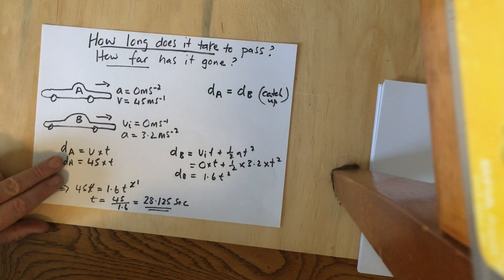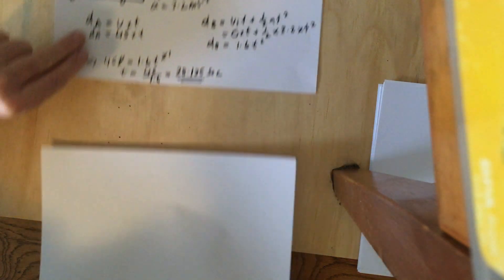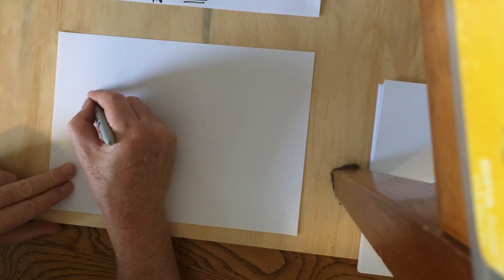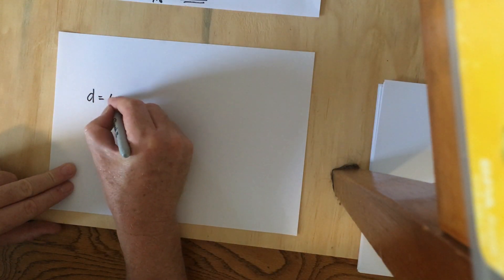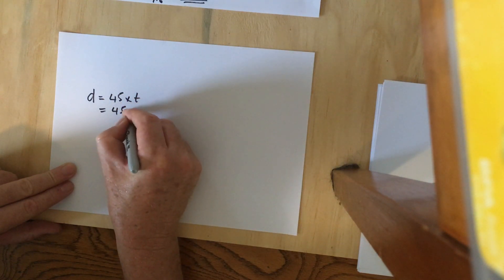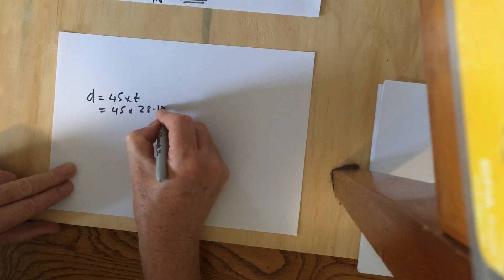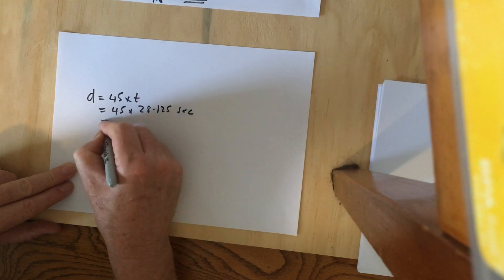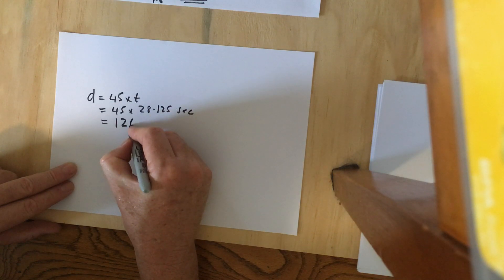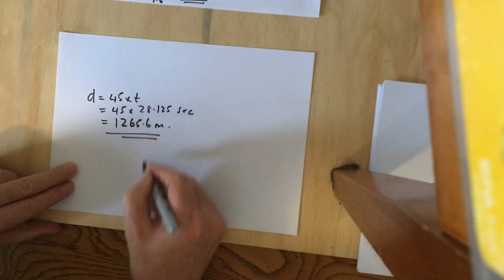The next question is: what's the distance traveled? That's relatively easy—just replace the time with 28.125 seconds. The answer is 1,265.6 meters for Car A.